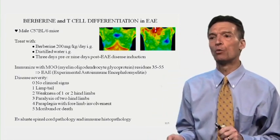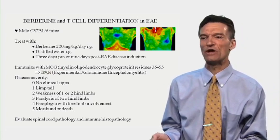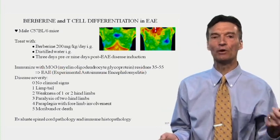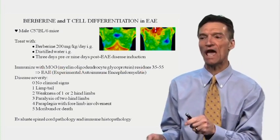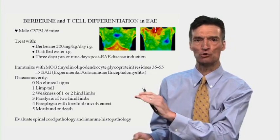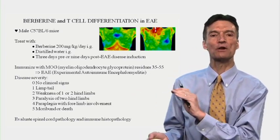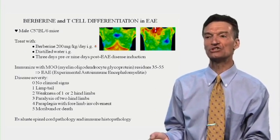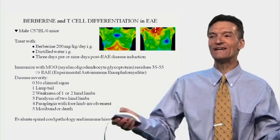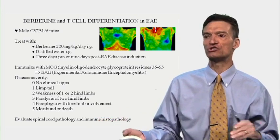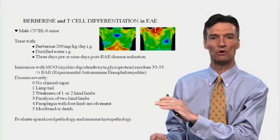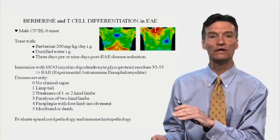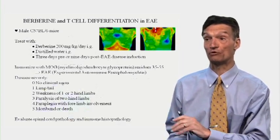Here we're going to immunize the mice with MOG — myelin oligodendrocyte glycoprotein — and that will bring on a Th1/Th17 immune attack against the brain tissue, which is essentially the experimental model of multiple sclerosis. We're going to take these mice, treat them with berberine or distilled water three days before or nine days after inducing this experimental multiple sclerosis, and look at disease severity, spinal cord pathology, and immune histopathology.